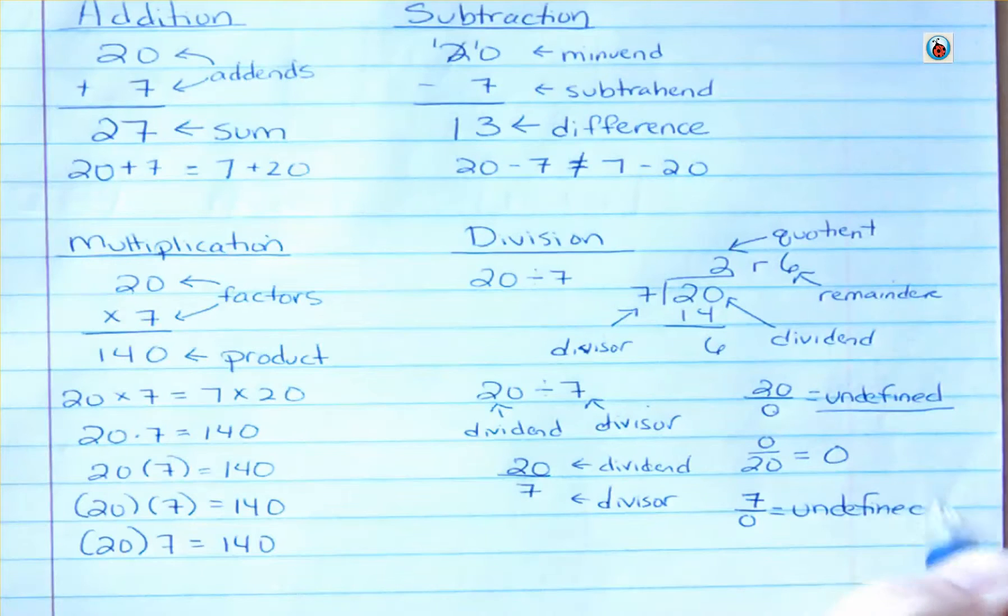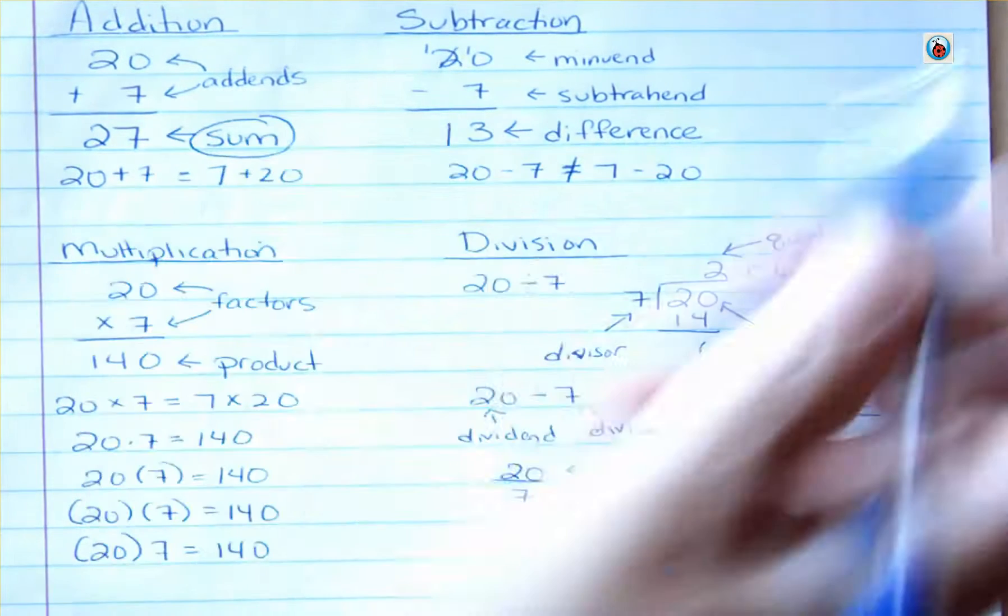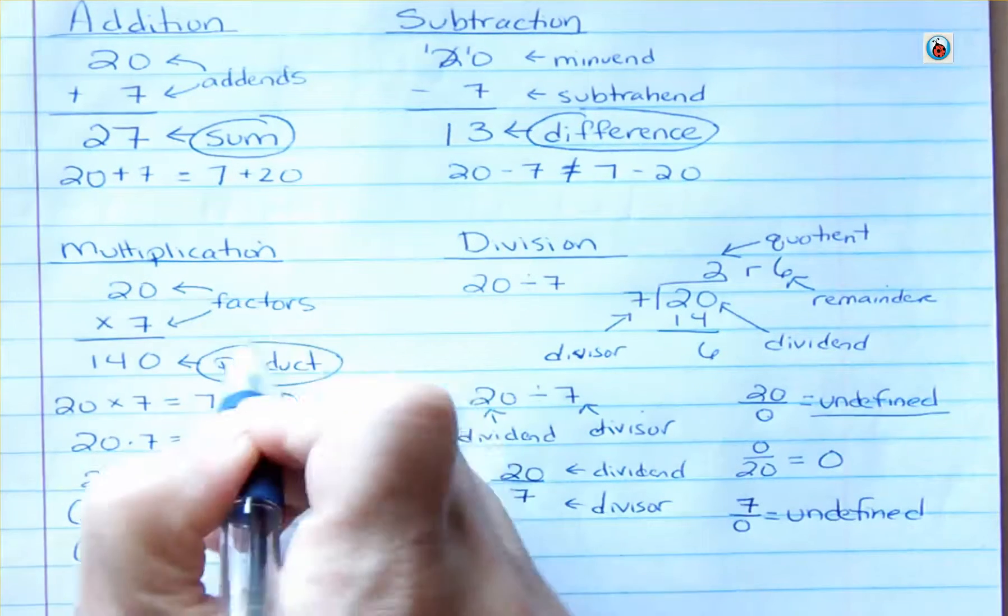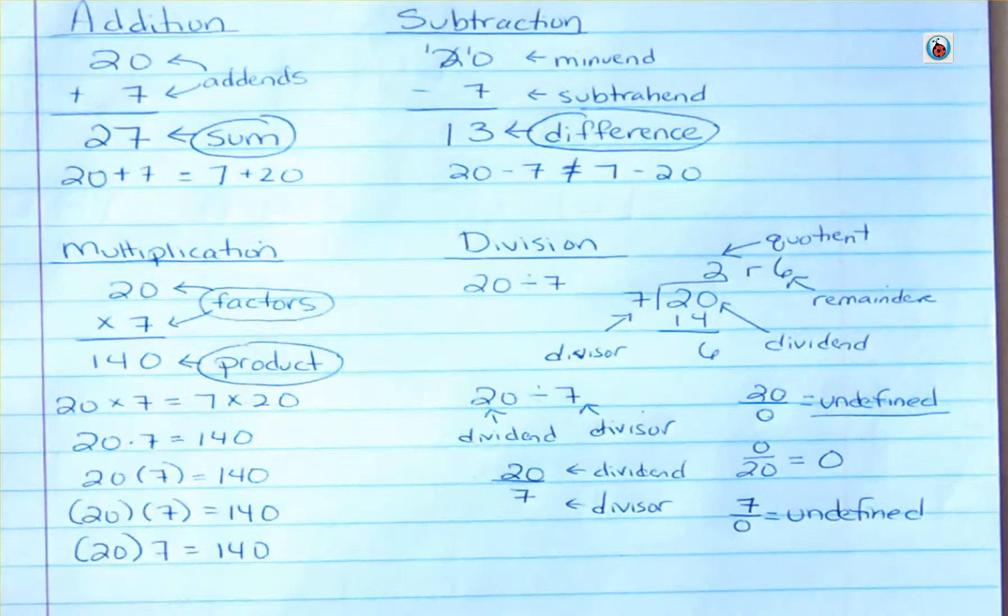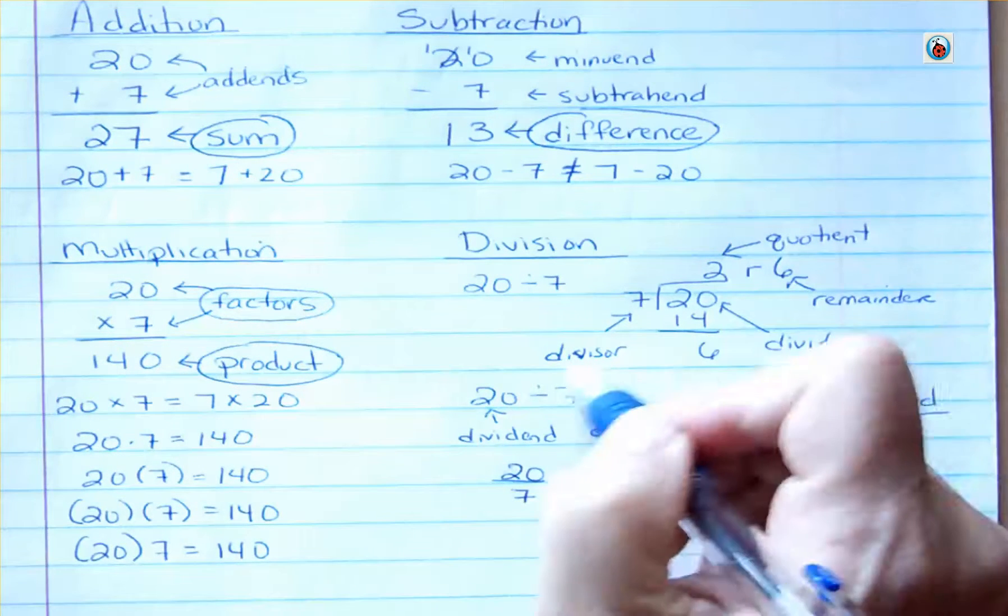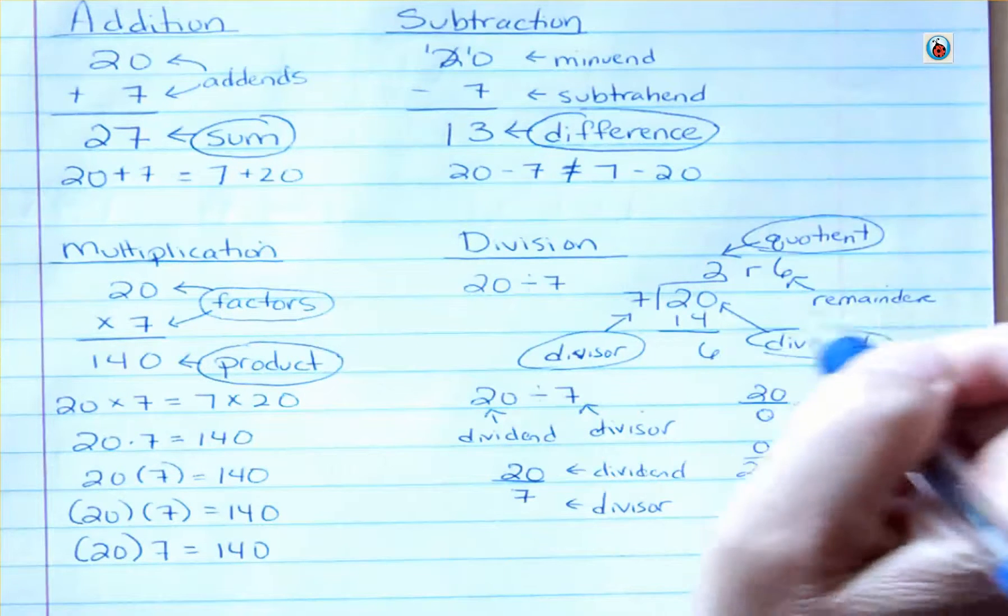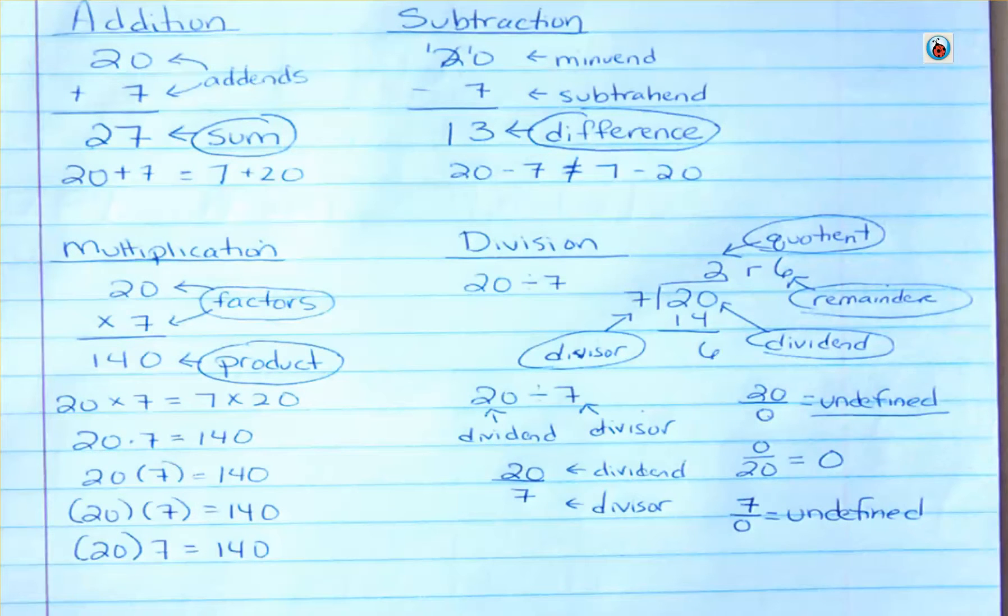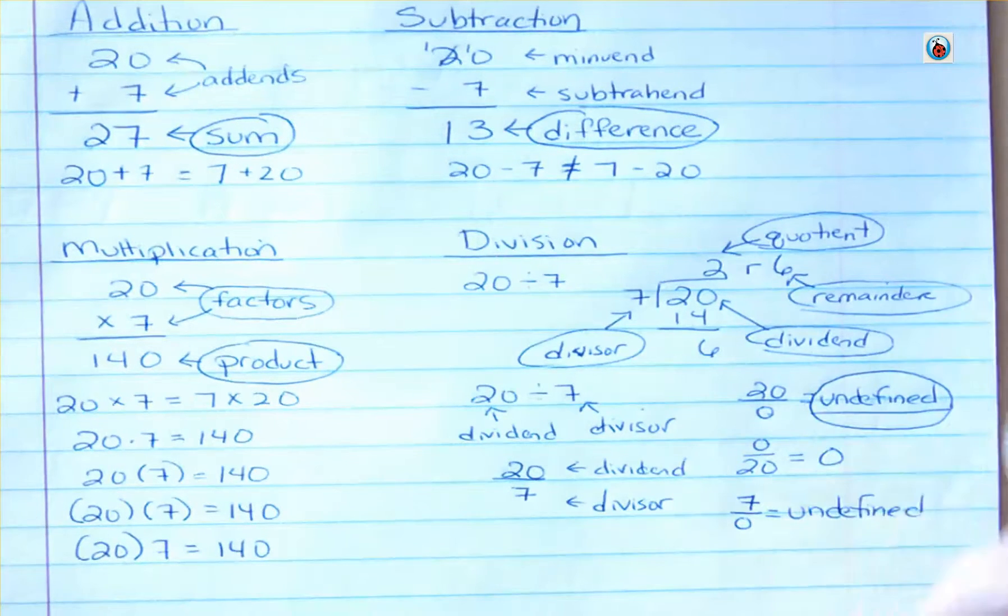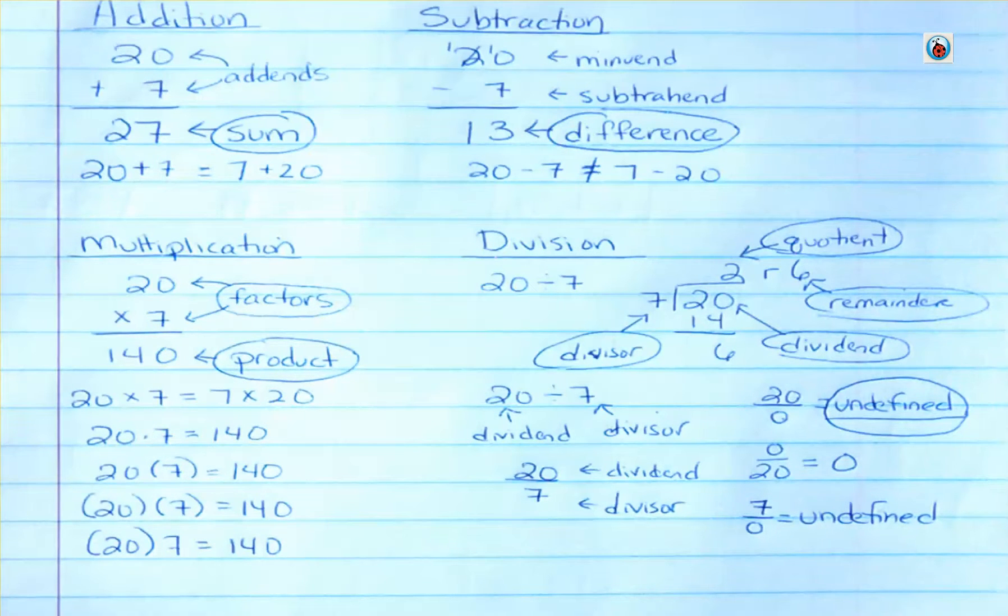So I'm going to circle the terms here that I really want you to know that are the most important. I want you to know what a sum is, and I want you to know a difference. I want you to know product. And factors is a term that comes up enough that you should get familiar with that. I want you to know dividend and divisor and quotient and remainder. Remainder, we'll start using decimals as we go further. And the last thing I definitely want you to know is remember what is undefined. That means when you divide by 0. Okay, that's it for the basic operations.